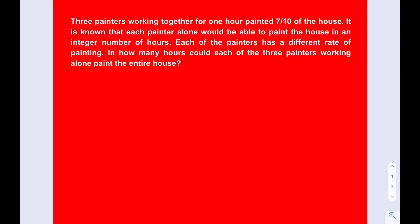Hello everyone. In this video I'm going to be solving a word problem. Three painters working together for one hour painted seven tenths of the house. It is known that each painter alone would be able to paint the house in an integer number of hours. Each of the painters has a different rate of painting. In how many hours could each of the three painters working alone paint the entire house?